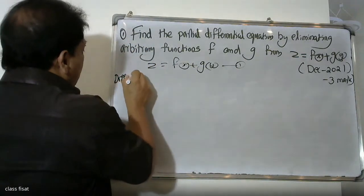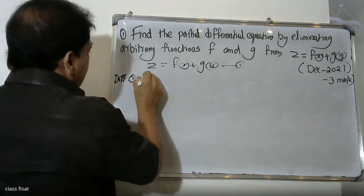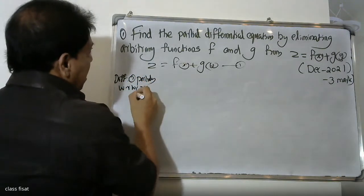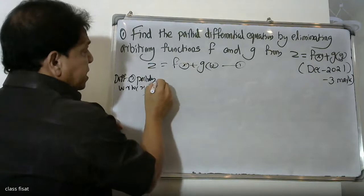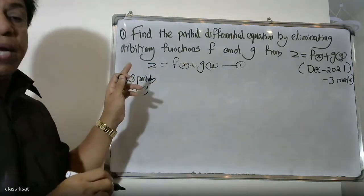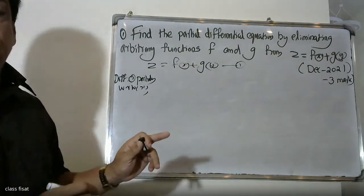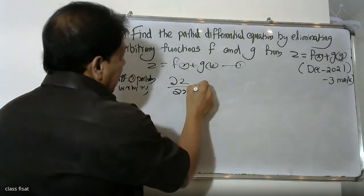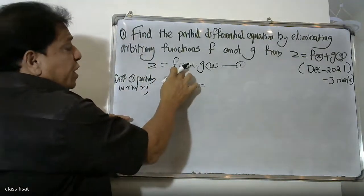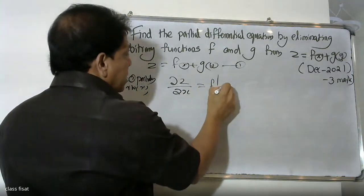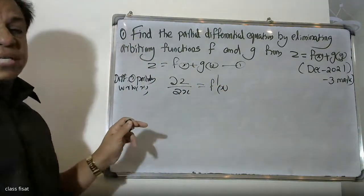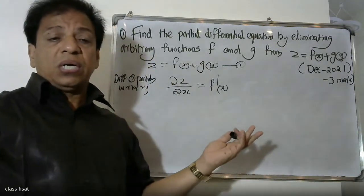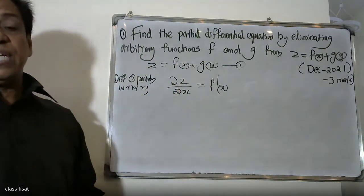Differentiating equation one partially with respect to x. The left-hand side gives ∂Z/∂x. On the right-hand side, f of x differentiates to f-dash of x, and g of y differentiates to 0, since we are partially differentiating with respect to x.